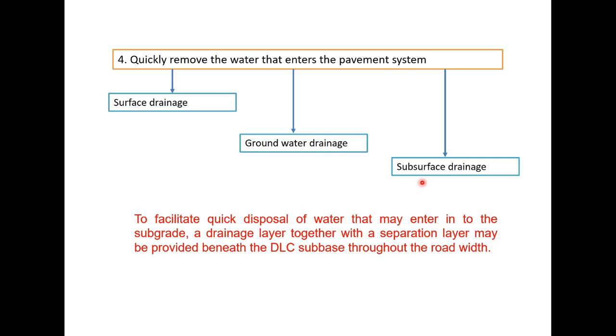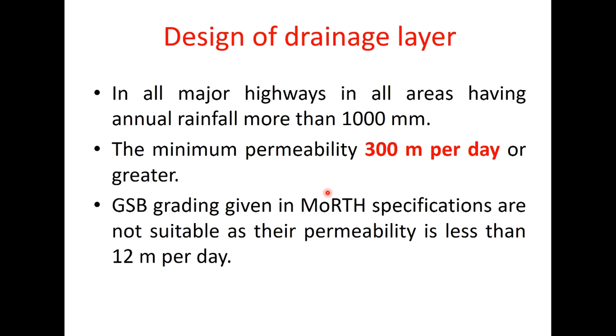The purpose of today's session is to design a drainage layer to facilitate quick disposal of water that may enter into the subgrade. IRC 58 suggests that drainage layer should be provided in all major highways in areas having annual rainfall more than 1000 mm and the minimum permeability of the material to be used as drainage layer should be 300 meter per day or greater.